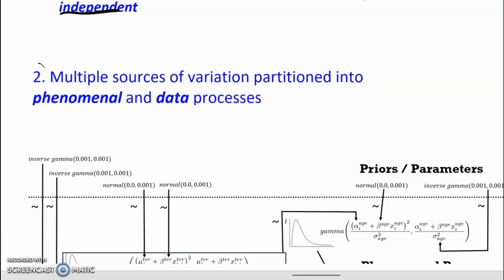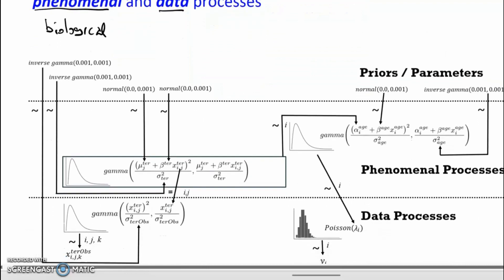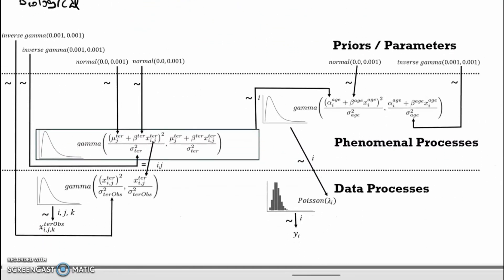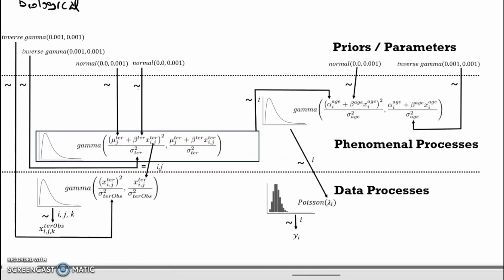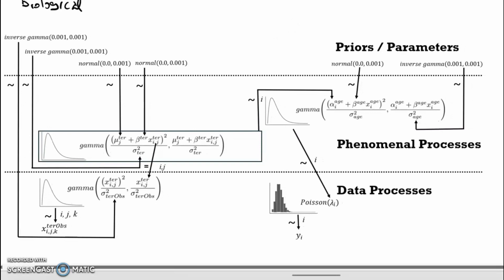The second feature is that hierarchical Bayesian models accommodate multiple sources of variation that can be partitioned into phenomenal processes — which, since we're dealing with birds, will be biological — and data processes. Returning to our complex system, we have four submodels with four distributions and four different variances that mean four slightly different things.